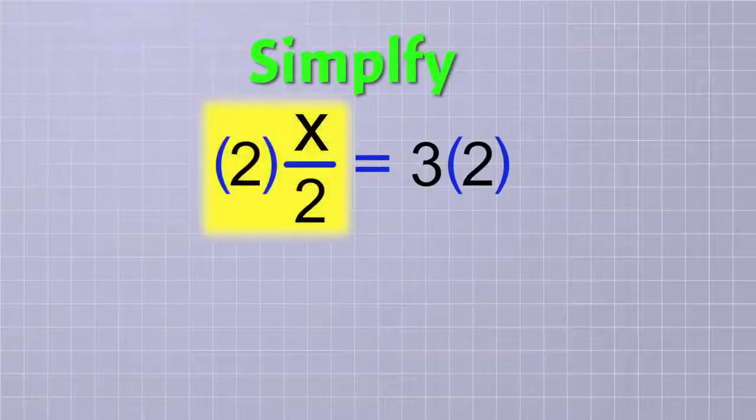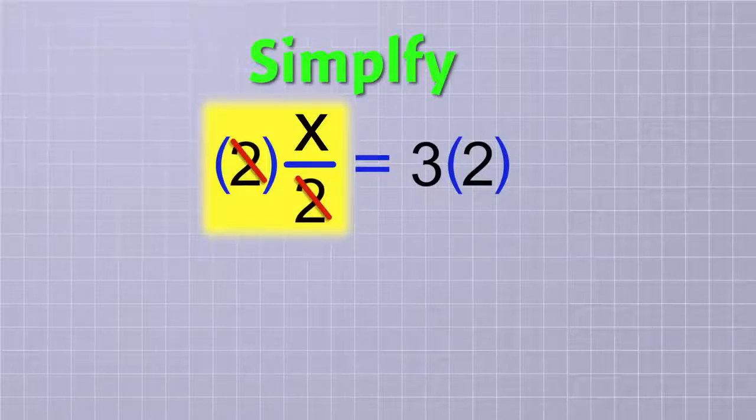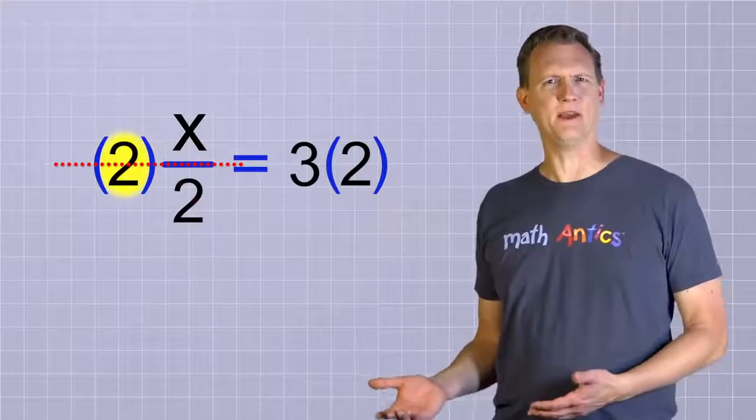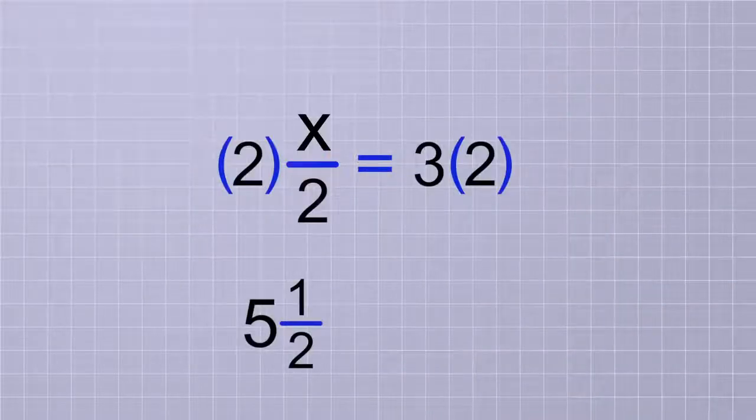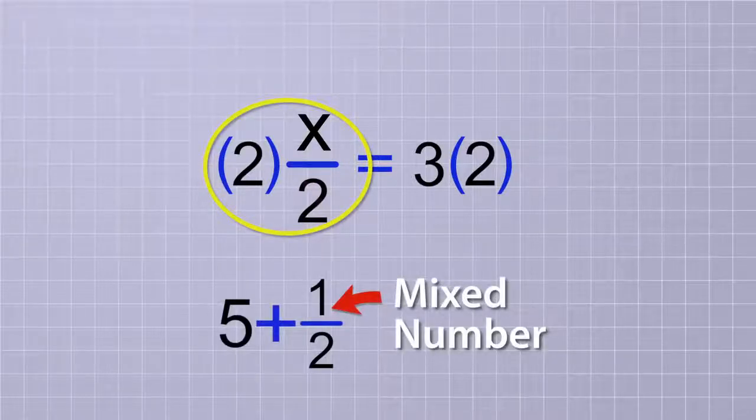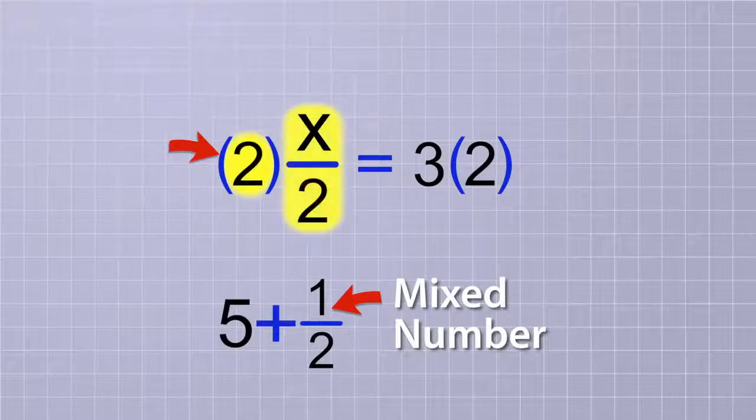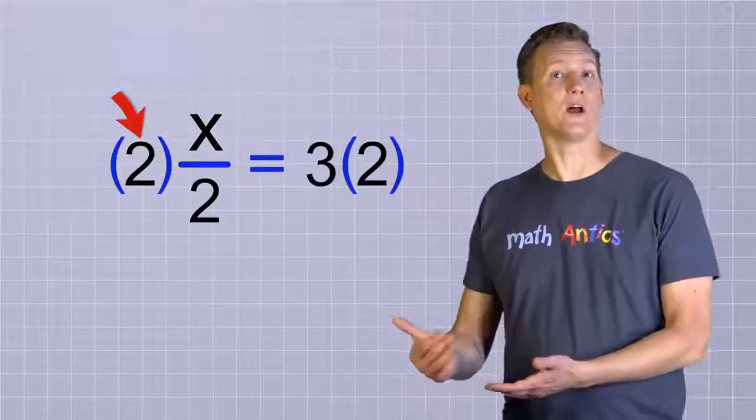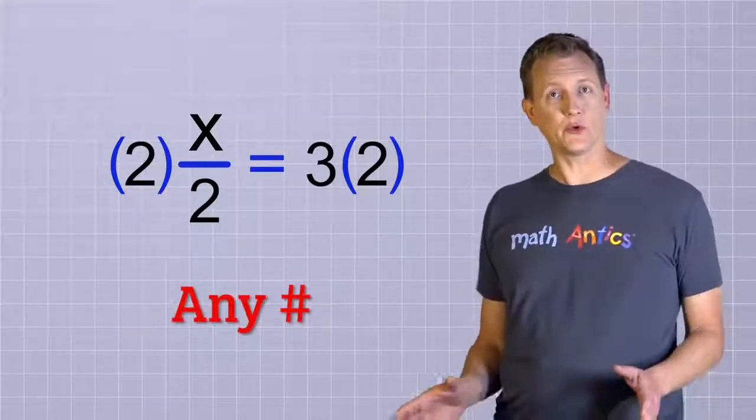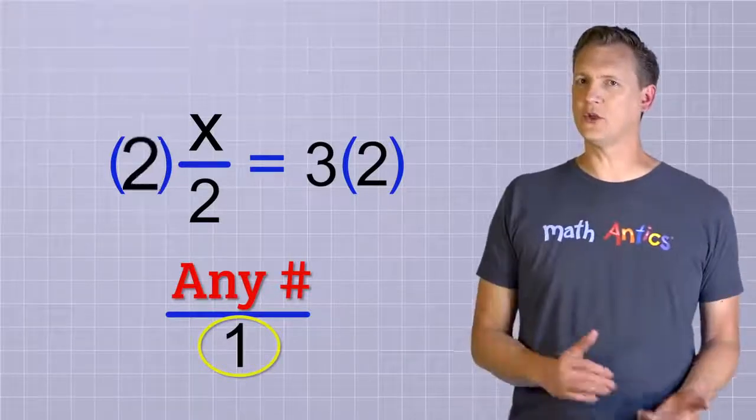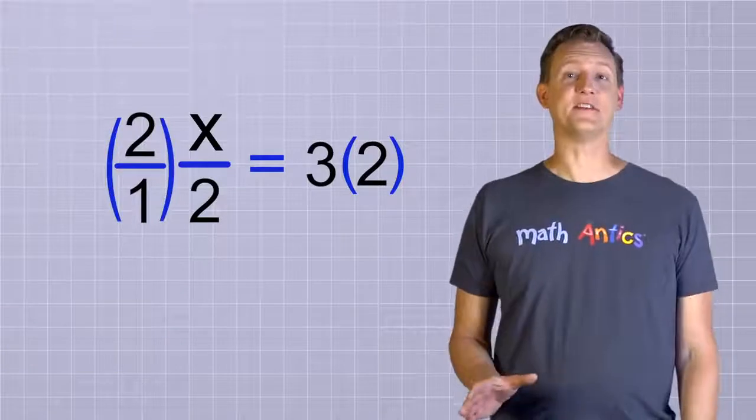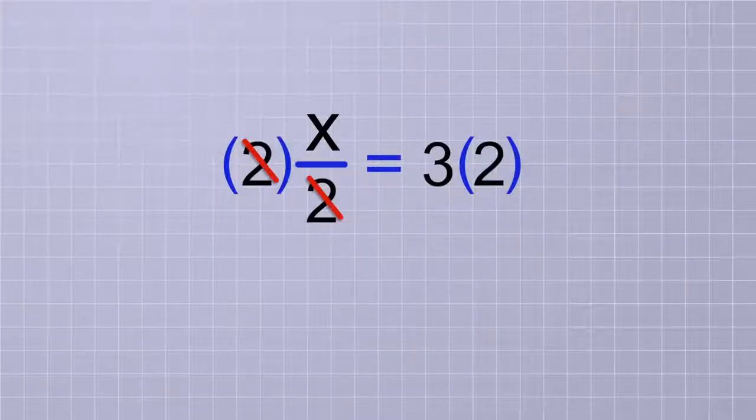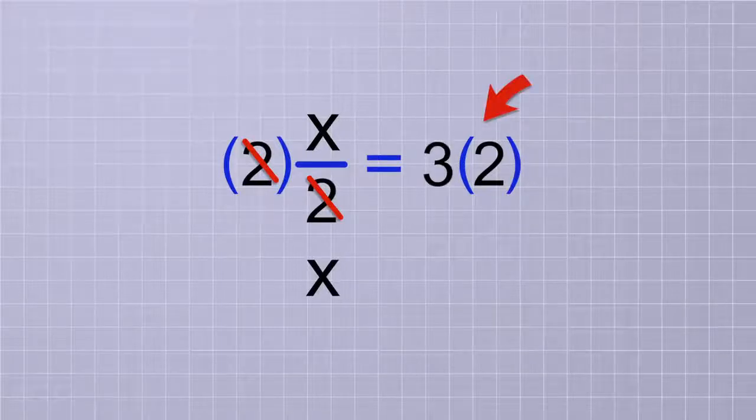Now to simplify: on the first side, the 2 on top cancels out the 2 on the bottom, since 2 divided by 2 is just 1. And I know what some of you are thinking: how is there a 2 on top? The 2 looks like it's really in the middle, kind of like how a mixed number looks. That's true, but don't confuse this with a mixed number. Mixed numbers involve addition, but the parentheses let you know that the 2 and the x over 2 are being multiplied, since multiplication is the default operation. Do you remember how you can turn any number into a fraction just by making 1 the bottom number? That means that 2 is the same as 2 over 1. Now you can see that the 2 really is on top. It's just that we don't usually show the 1 on the bottom. So the 2's cancel, leaving the x all by itself on this side. And on the other side, we have 3 times 2, which is just 6.